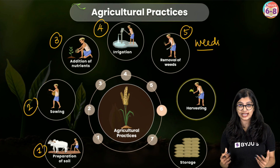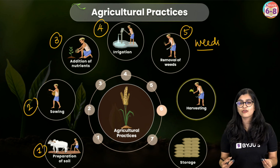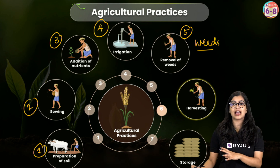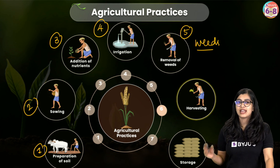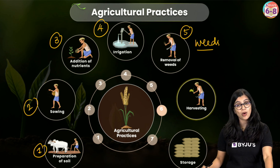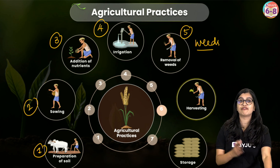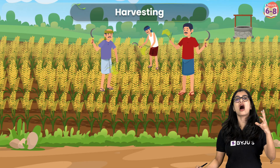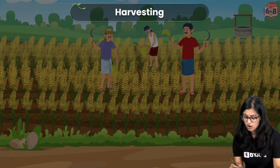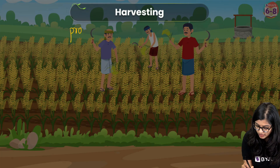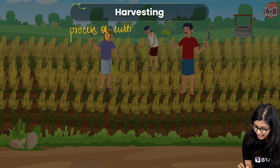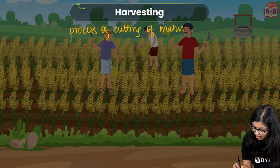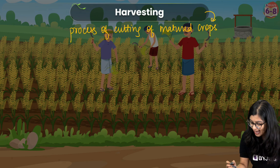We need to remove these unwanted plants — what we understand as weeds — and this process is called weeding. So after completing steps one through five, we have allowed our crops to grow. Eventually our crops will be fully mature, and that is when we move on to step six: harvesting. This process of cutting of matured crops is what we call harvesting.